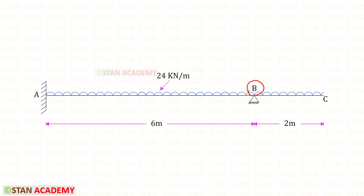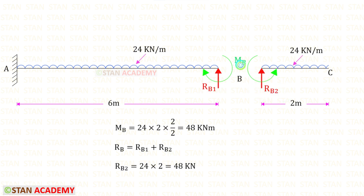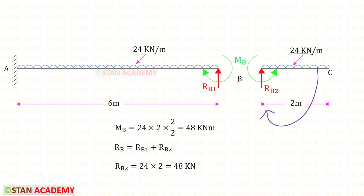From point B, let us split the beam into two parts: AB and BC. At point B there will be two reactions, RB1 and RB2. To find the moment MB, we multiply the uniformly distributed load 24 by the distance and then by the distance divided by 2, so MB equals 48 kilonewton-meters. The UDL acts clockwise, so moment MB acts anti-clockwise in BC and clockwise in BA.